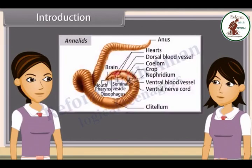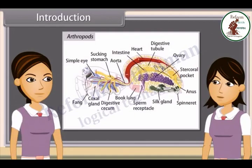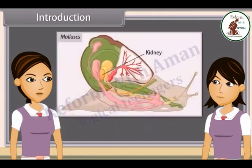While in annelids, it is nephridia. In arthropods, excretory organs are coxal glands, antennary or green glands, and Malpighian tubules, while in molluscs, it is kidneys.